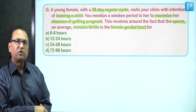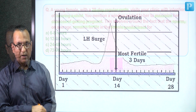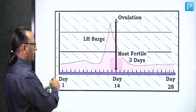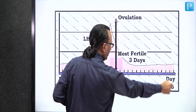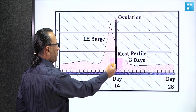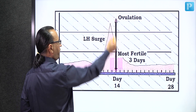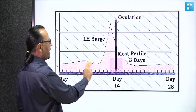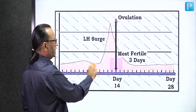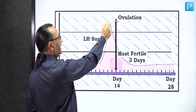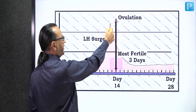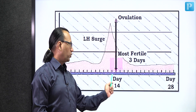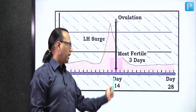We will draw a diagram — a graphic representation of the LH hormone — similar to the diagram we are looking at now. It represents the menstrual cycle from day one to day 28. Day 14 will be the day of ovulation. The LH hormone undergoes a surge just before ovulation, reaches a peak, then dips down. The most fertile three days are around day 14, the day of ovulation.